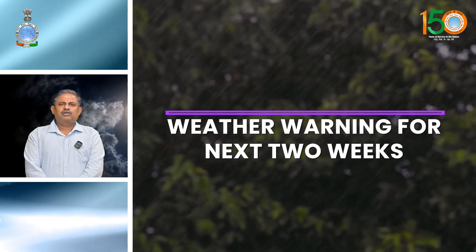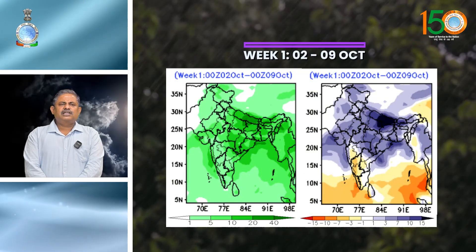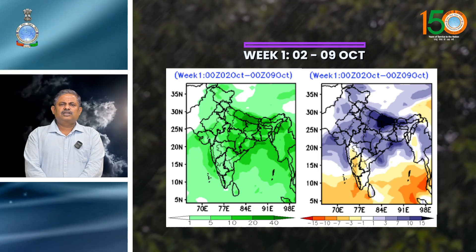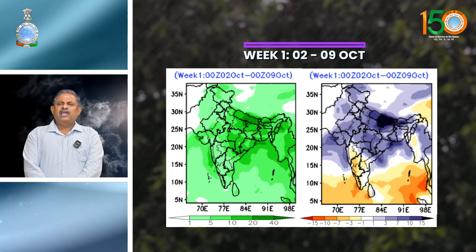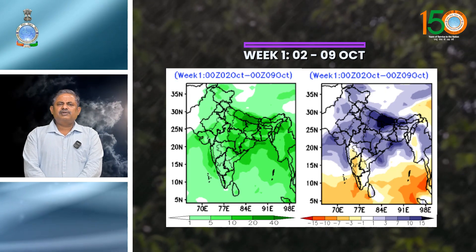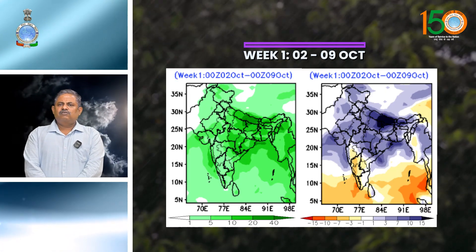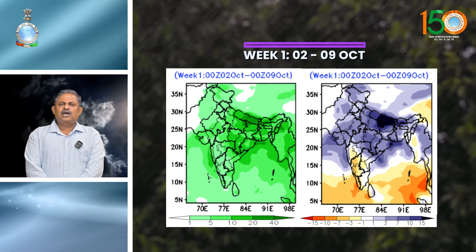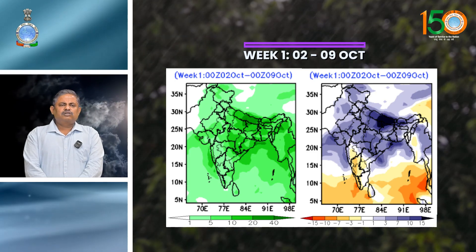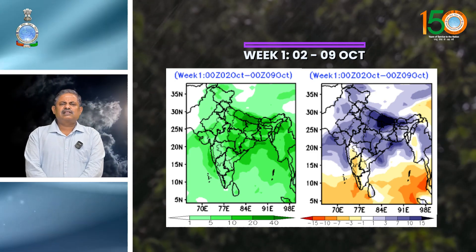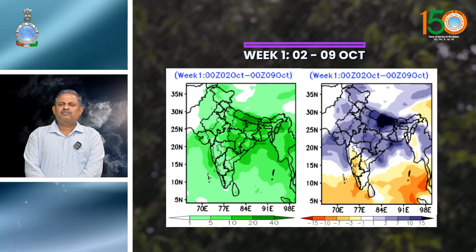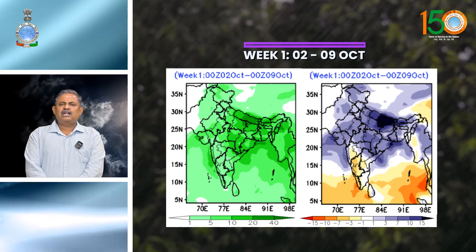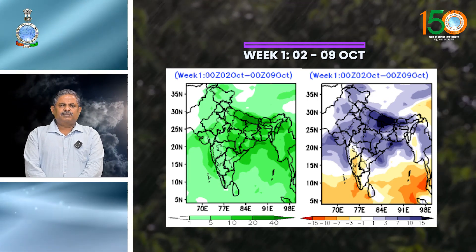The forecast for the next two weeks — for Week 1, from today to 8th October: under the influence of the deep depression over west central and adjoining northwest Bay of Bengal, heavy to very heavy rainfall with extremely heavy rainfall at isolated places is likely over south Chhattisgarh, Odisha, and north coastal Andhra Pradesh today, and over Bihar on 3rd and 4th October. A fresh intense western disturbance is likely to affect northwest India from 4th October, with high moisture feeding from the Arabian Sea and Bay of Bengal to northwest India at lower tropospheric levels mainly during 5th to 7th October.